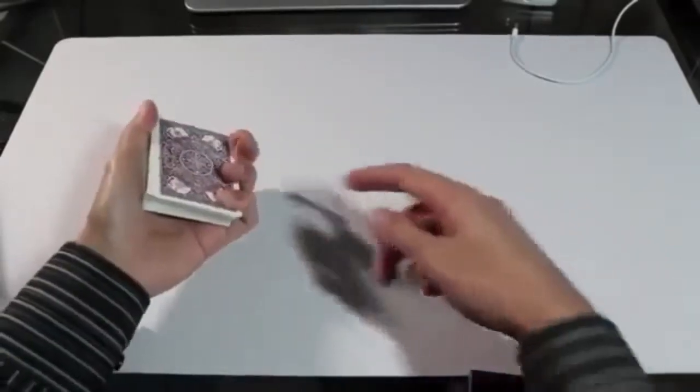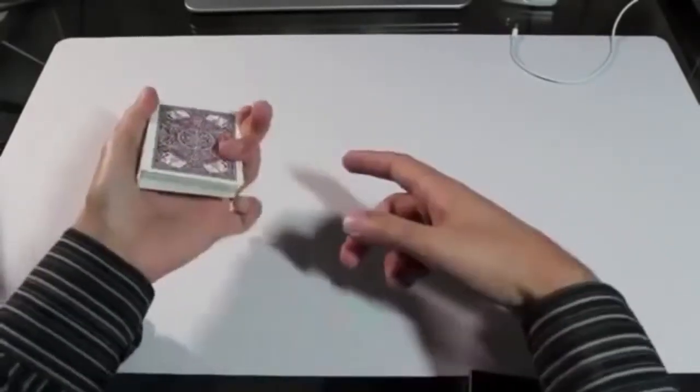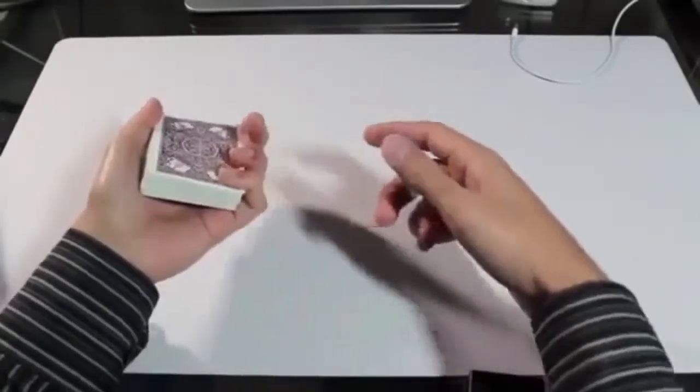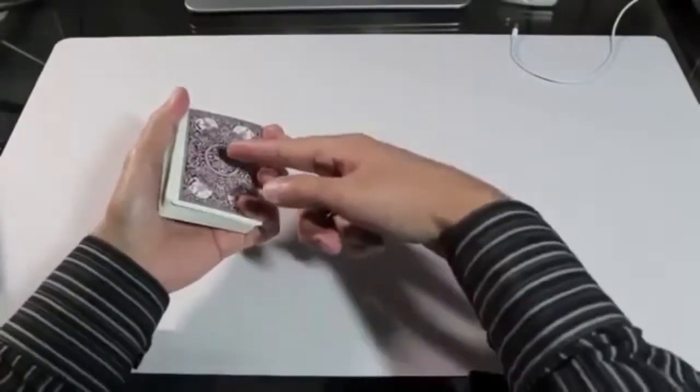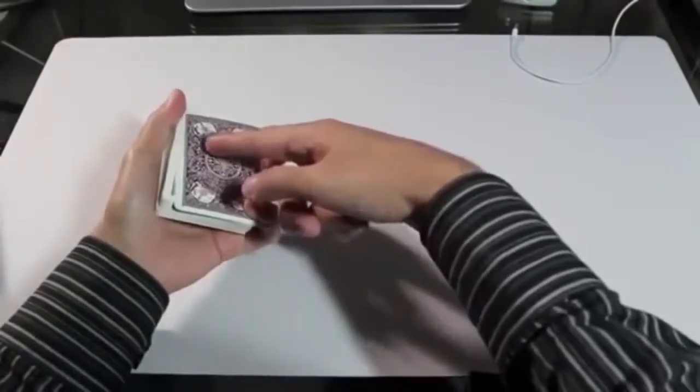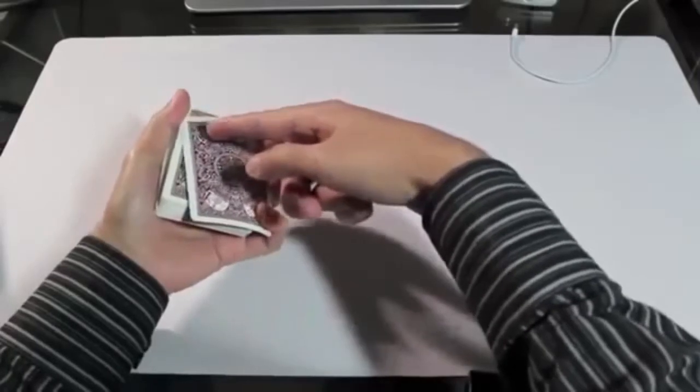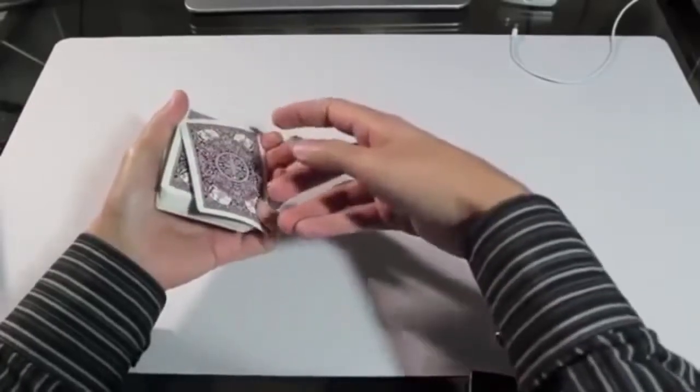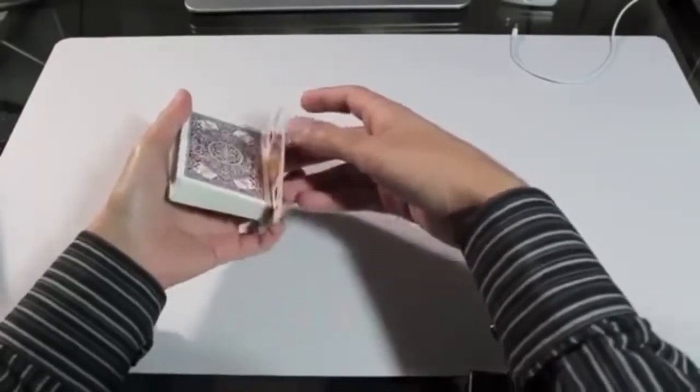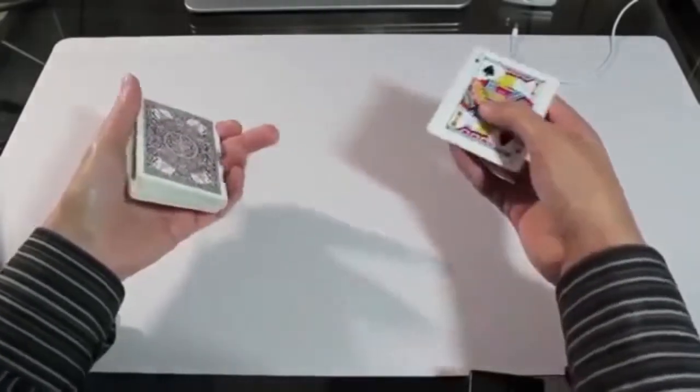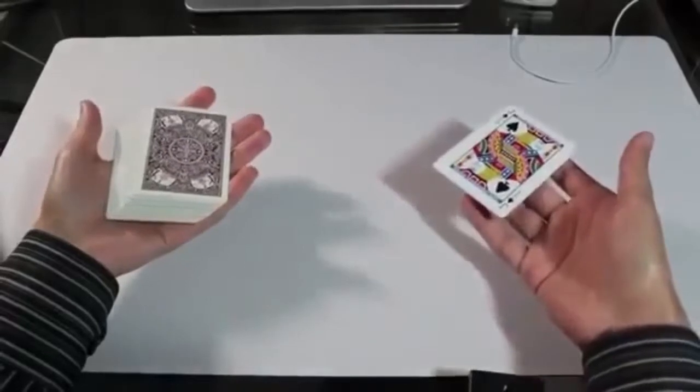And then what's happening is with my pinky I'm flicking downwards. I'm contacting this top card and I'm flicking downwards. And what that does is it causes this top card to escape the grip from the left thumb. And once it escapes the thumb, the card is going to flip over, it's going to rotate 180 degrees, and then it's going to land in my awaiting hand.